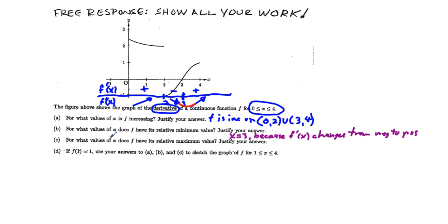Now this part c is a little trickier. For what values of x does f have a relative maximum value? Justify your answer. Well, we change here. If we look, our function is increasing between 0 and 2, and then at 2 we start decreasing. So our relative maximum is going to be x equals 2.